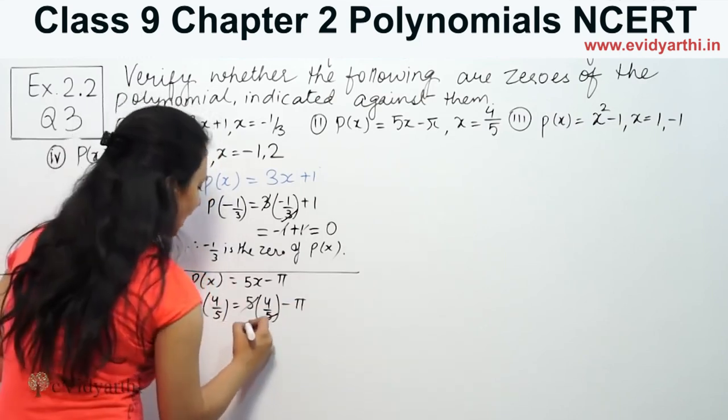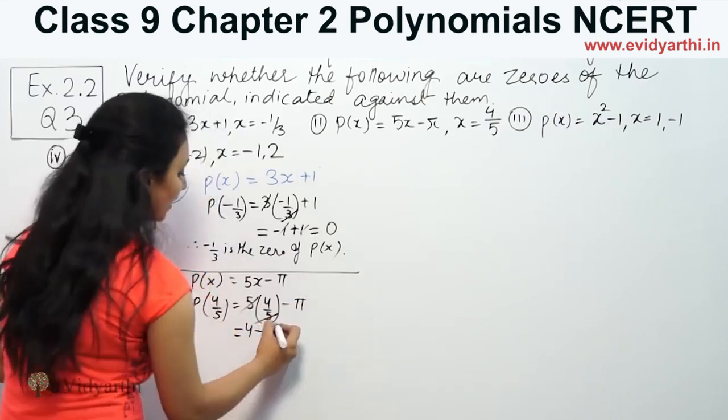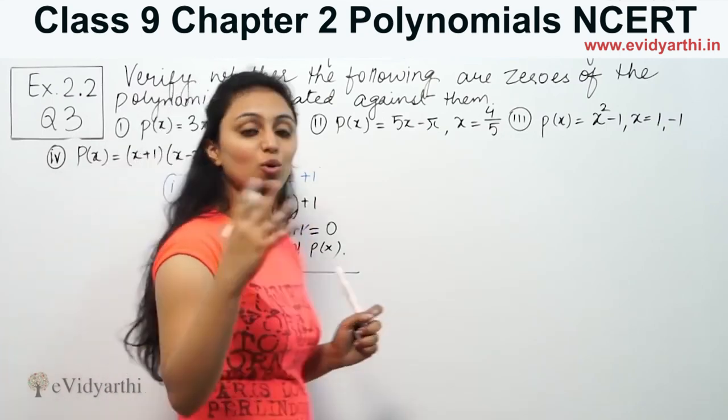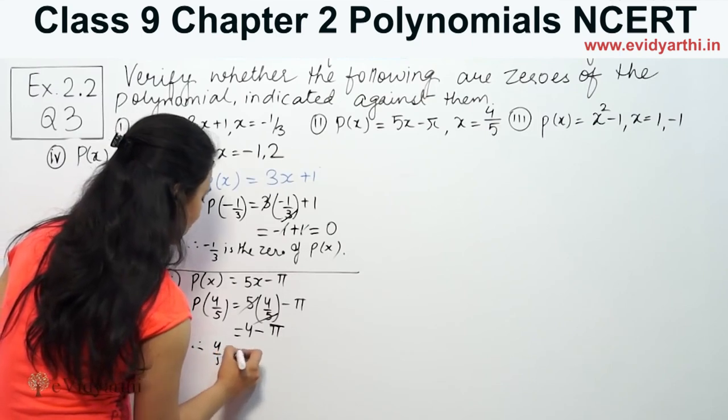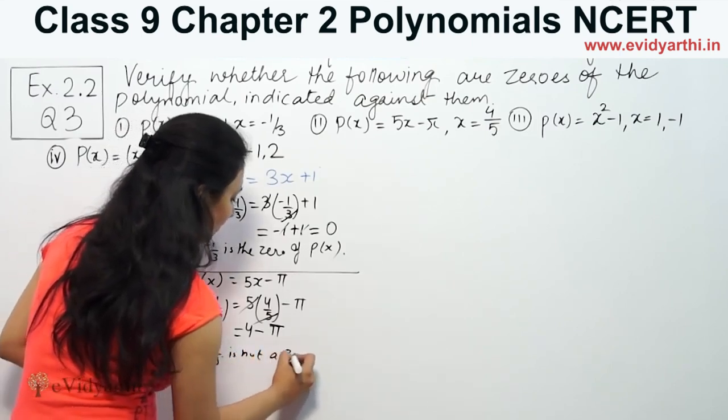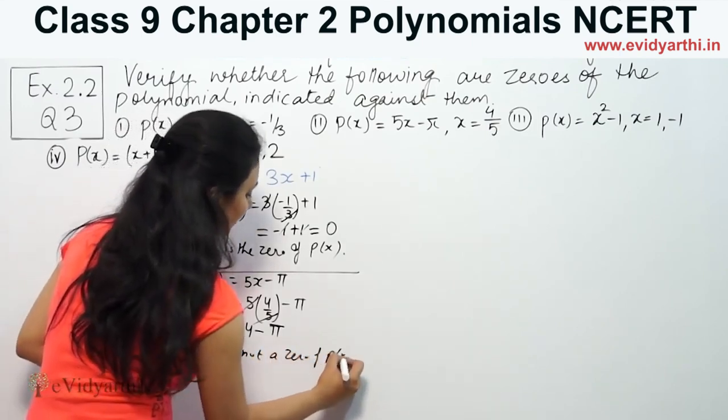5 and 5 cancel. We get 4 - 5, which is -1. So that means 4/5 is not a zero of P(x).